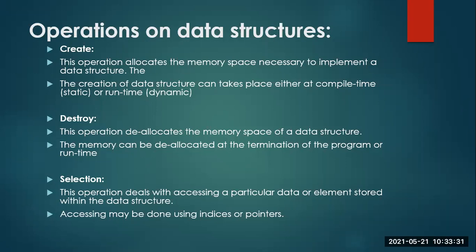The third operation is selection — this operation deals with accessing a particular data element stored within the data structure. Accessing may be done using indices or pointers. You know in arrays we use indices — whenever you need to select any one particular index value, you write A of [2] and you get the respective values stored in the array. So selection of a particular item from the data structure is possible.